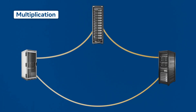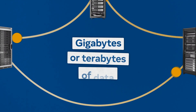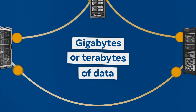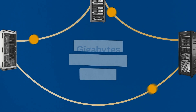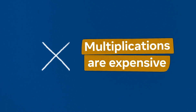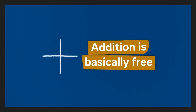So for each multiplication, three numbers need to get sent across the internet. When you're doing millions or billions of multiplications in MPC, you might find yourself sending gigabytes or even terabytes of data around, and that can get expensive. As it turns out, the cost of sending data between data centers is usually the most expensive part of MPC. So when we are designing MPC protocols, we usually try to minimize the number of multiplications since they require communication. Addition does not require any communication, so we tend to think of addition operations as basically free.